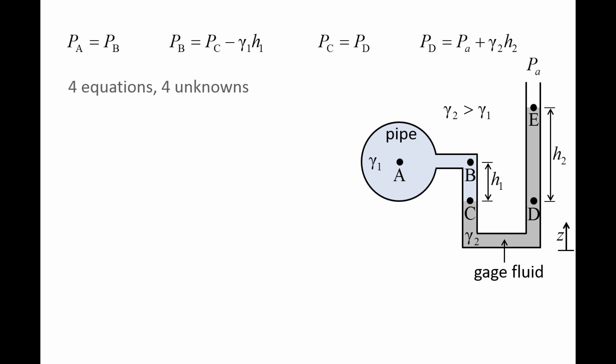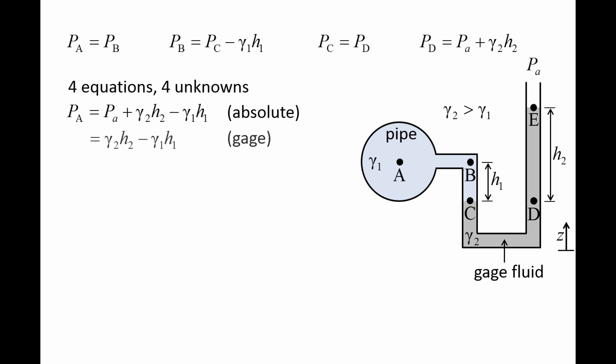We have four equations and four unknown pressures — the pressure at points A, B, C, and D. We can solve these equations to find the absolute pressure at point A, which is the ambient pressure plus gamma 2 H2 minus gamma 1 H1. For the gauge pressure, we would subtract the ambient pressure.